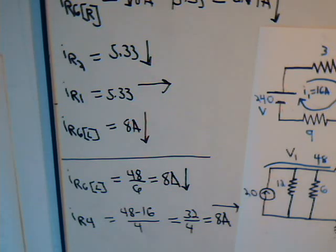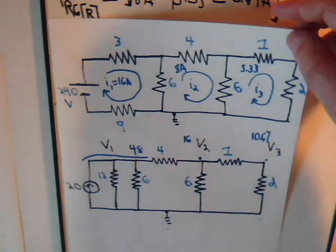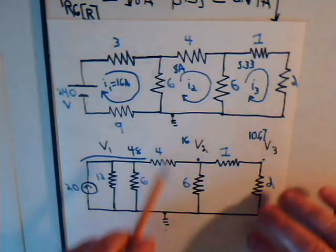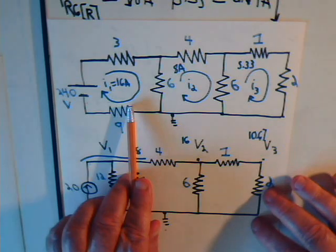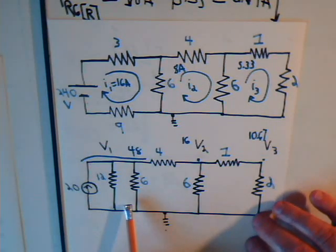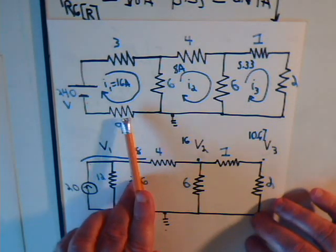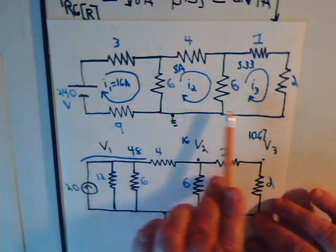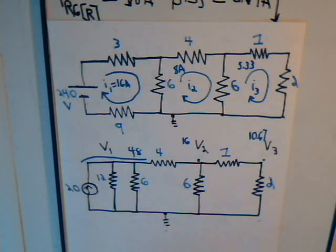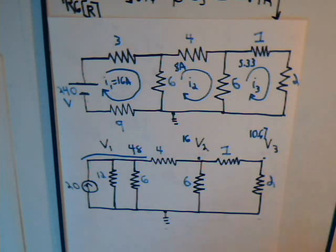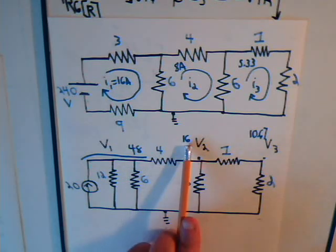This is part C now in our video where we started out with this circuit and then we drew it into its equivalent circuit here. Then back in our original circuit we determined what the mesh currents are, and with the equivalent circuit we also determined what the node voltages were.